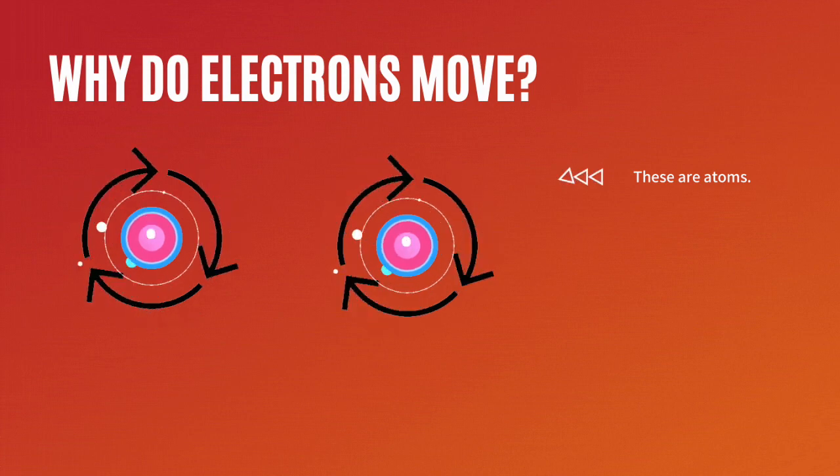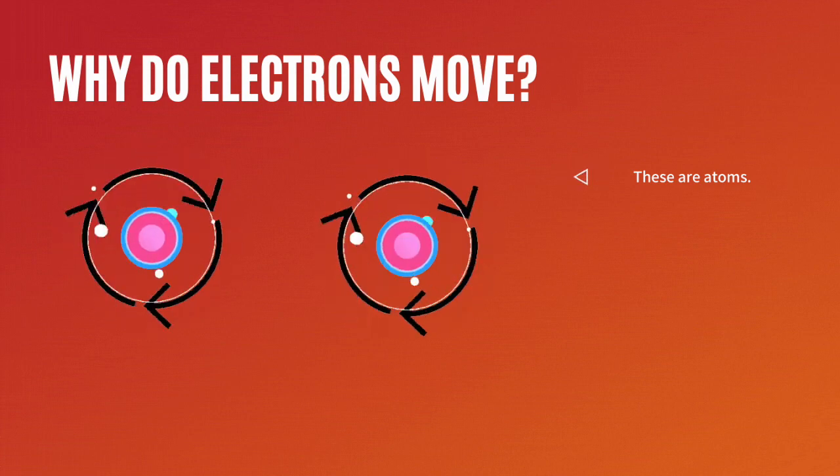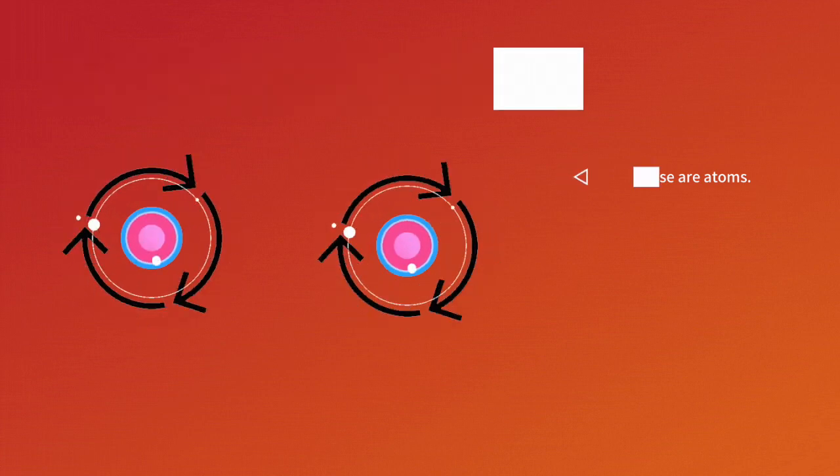So, why do electrons move? Well, these are atoms. The negative particles, the electrons, are orbiting around the atom's nucleus.